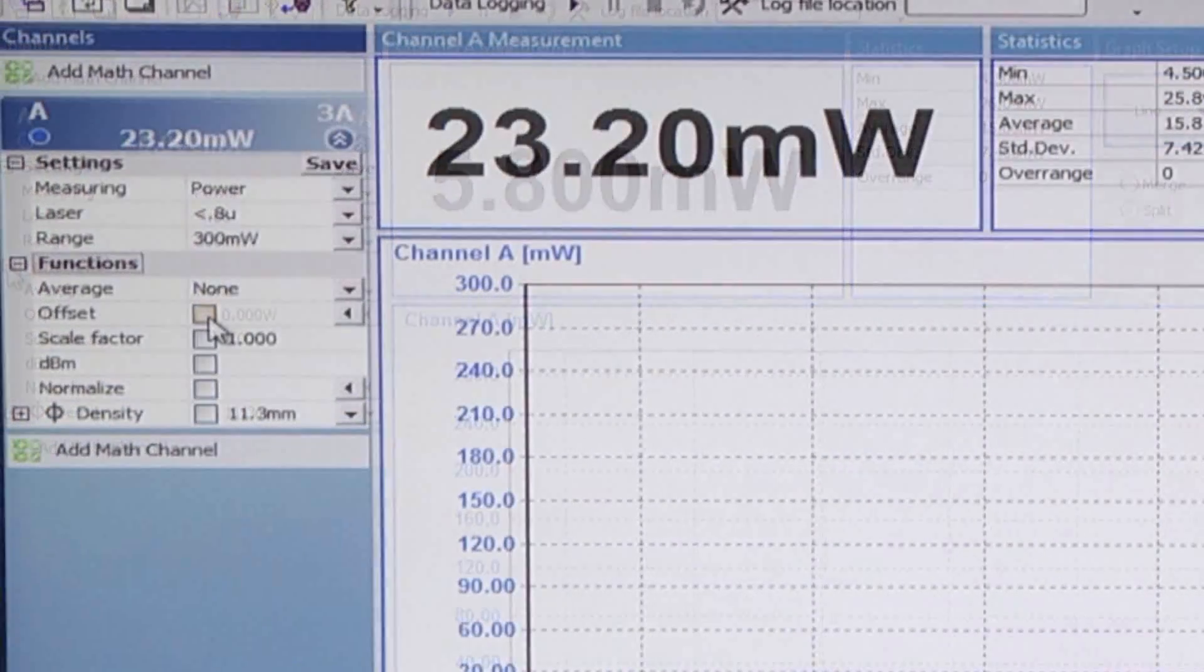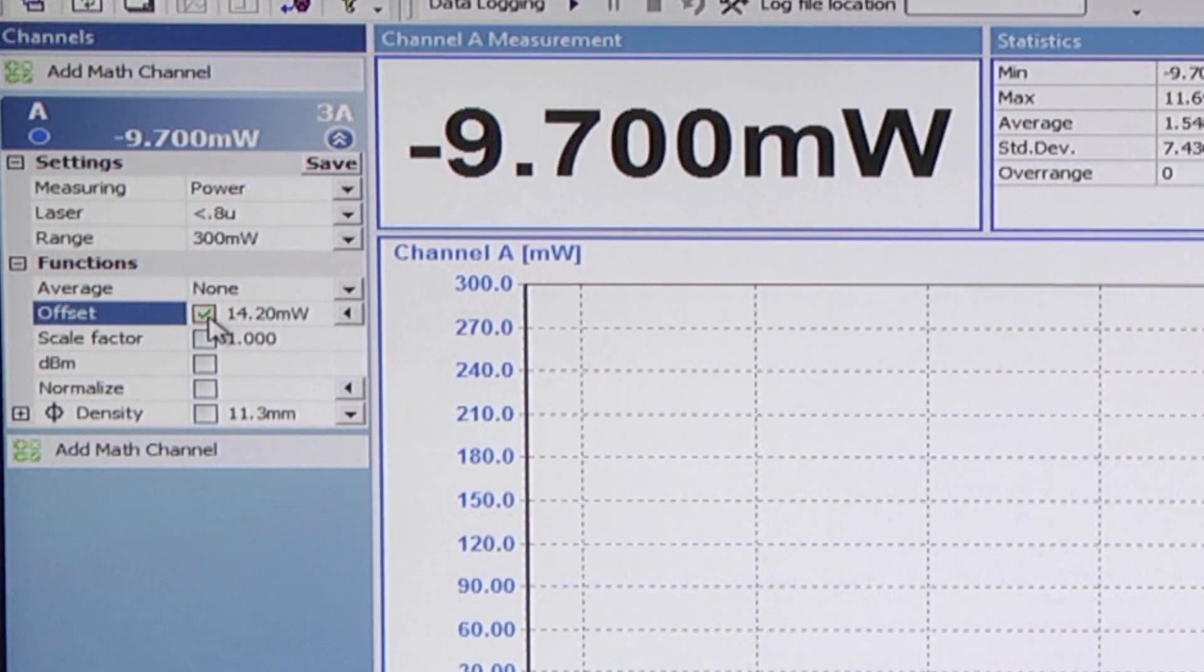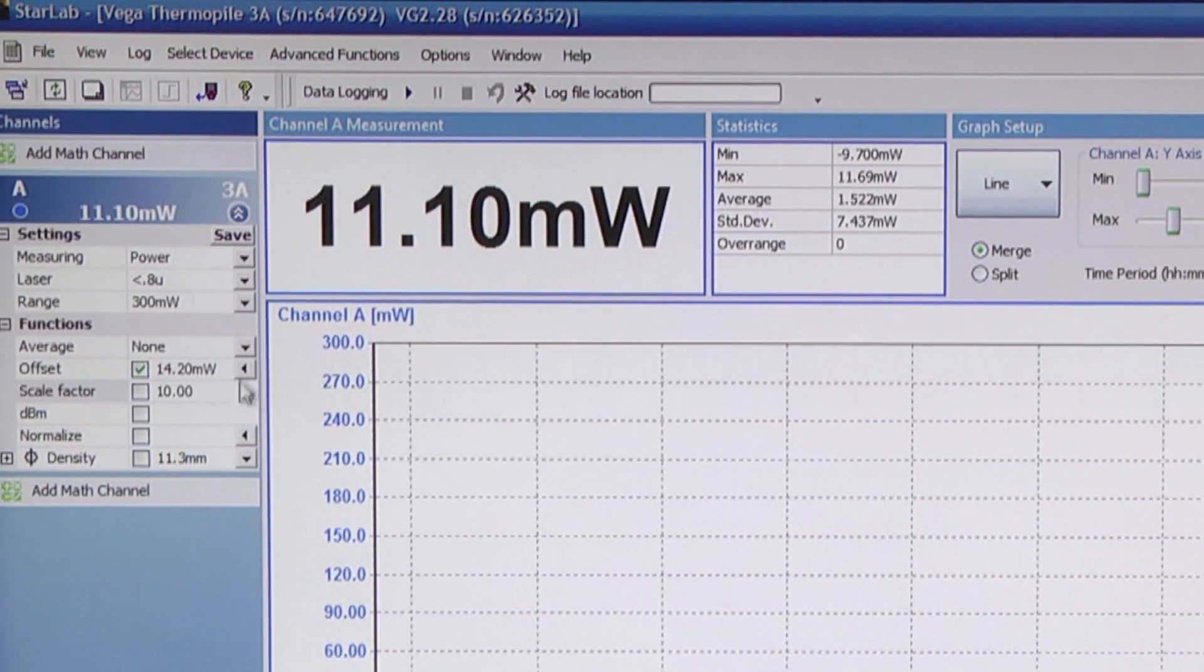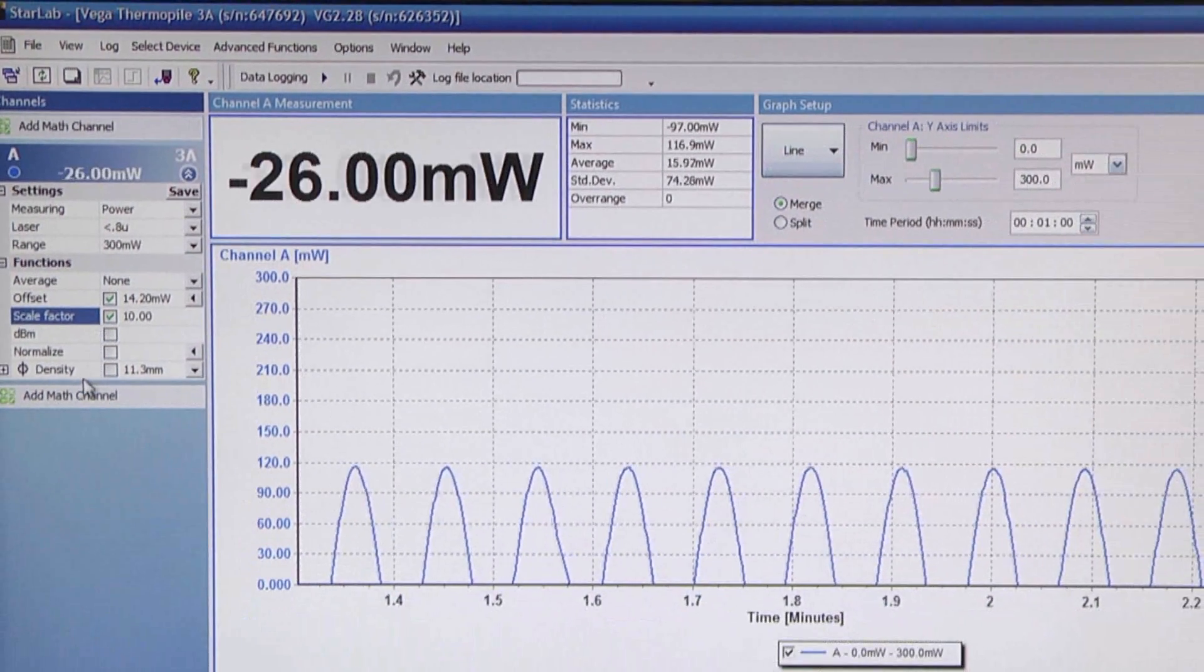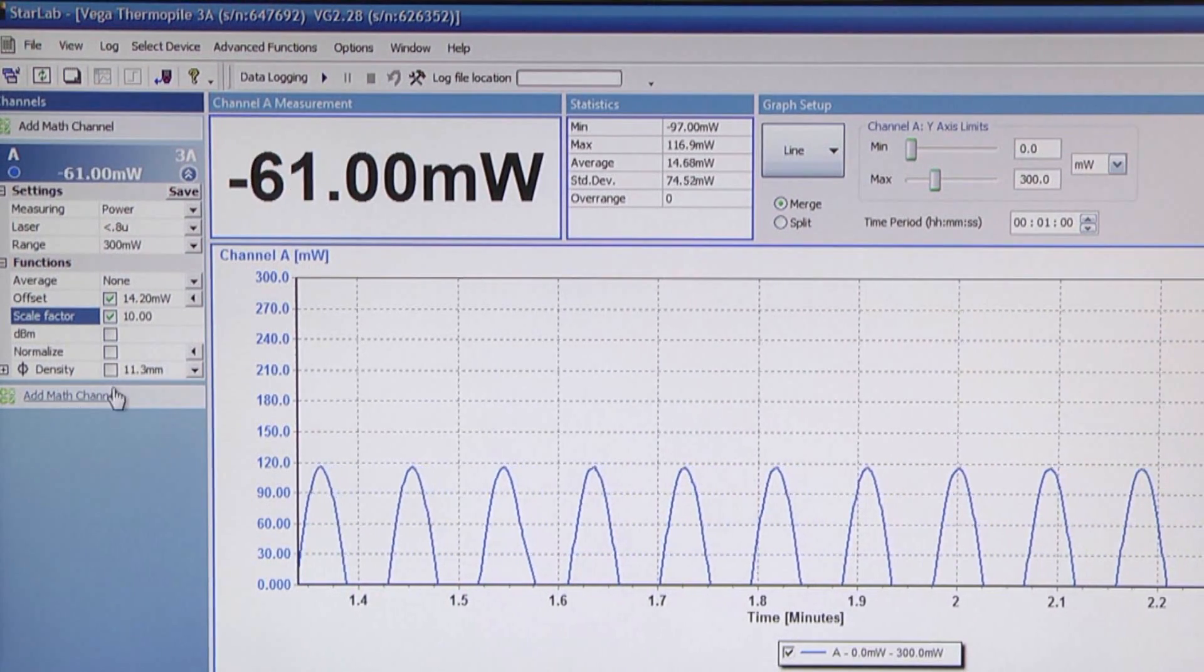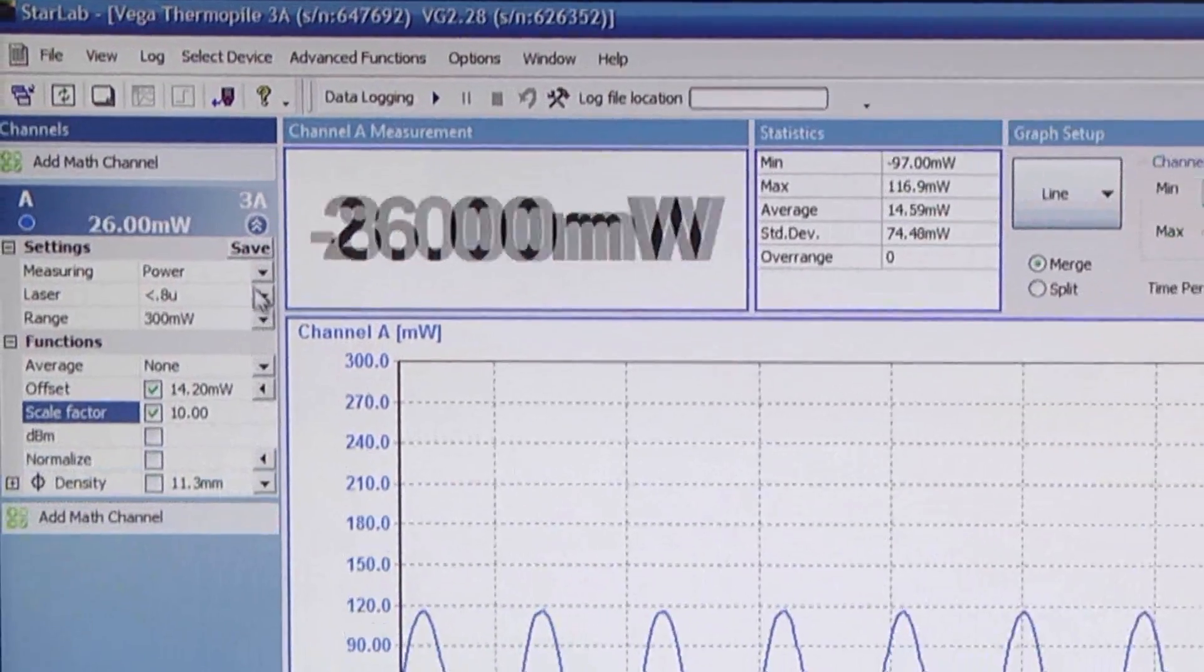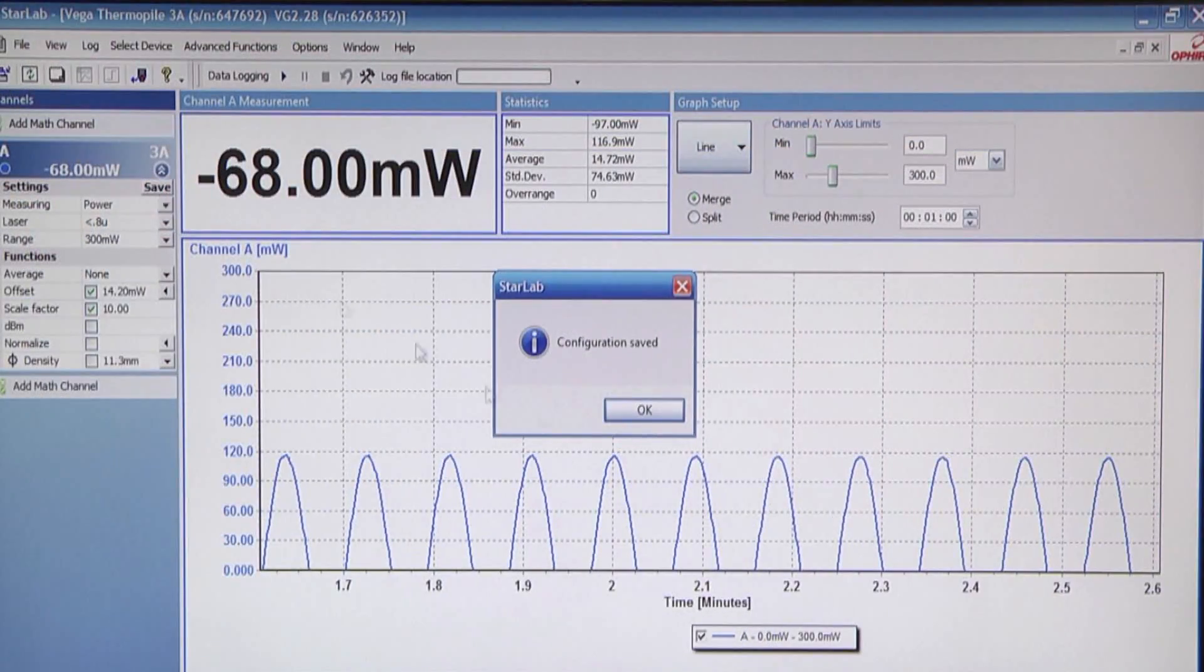If we click on offset, the present reading is subtracted from the power reading. If we put say 10 in the scale factor box and click, then the reading is 10 times the previous reading, and so on with the other functions. If we click here on save, then these settings are saved.